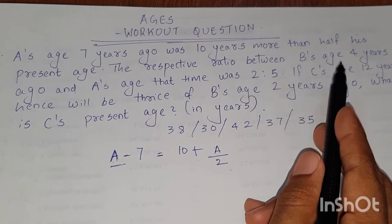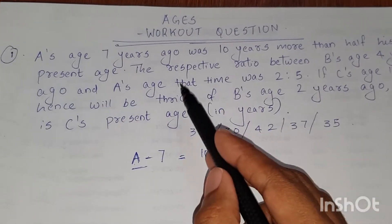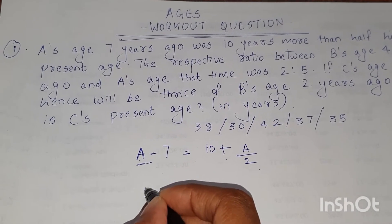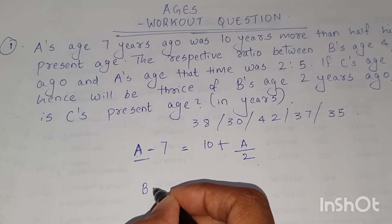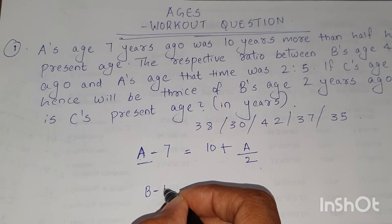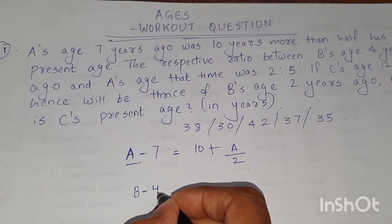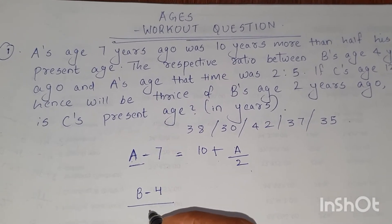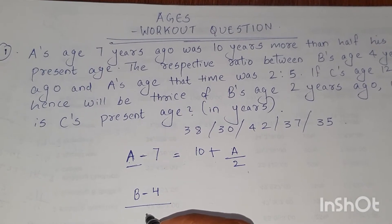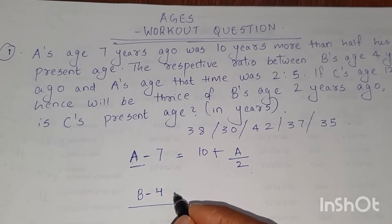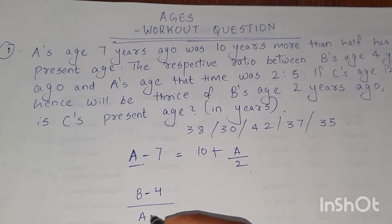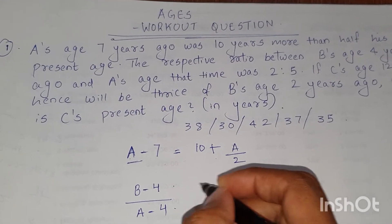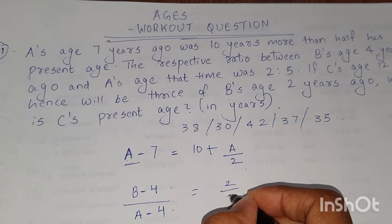Now the respective ratio between B's age 4 years ago — let B's present age be B, and his age 4 years ago means B minus 4. The ratio between B's age 4 years ago and A's age at that time — that time means 4 years ago, so A's age 4 years ago will be A minus 4. The ratio between this and this was 2 by 5.